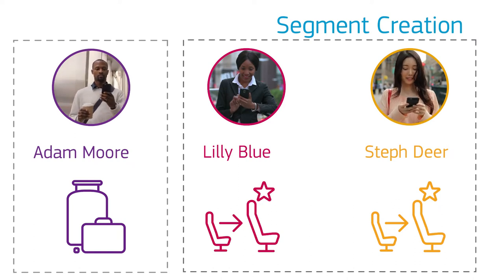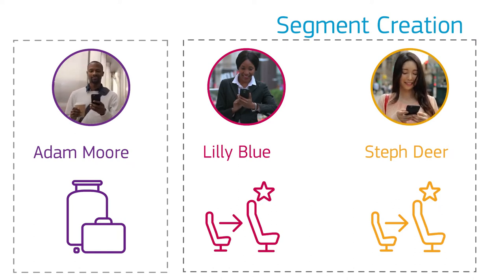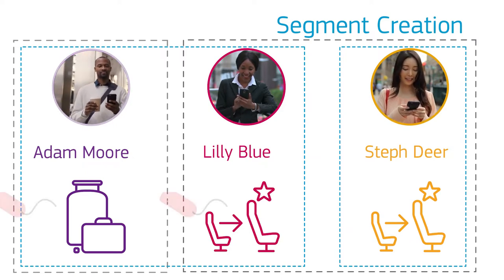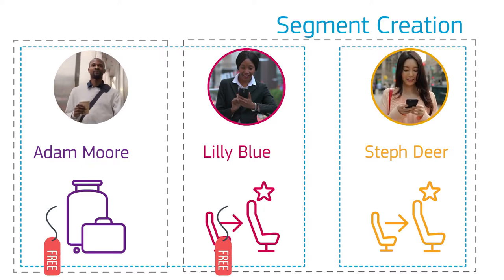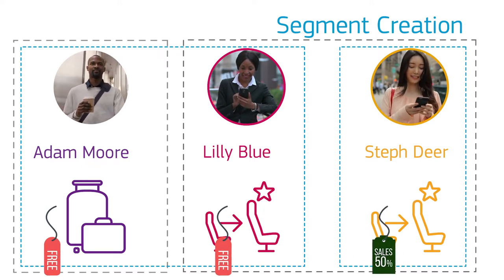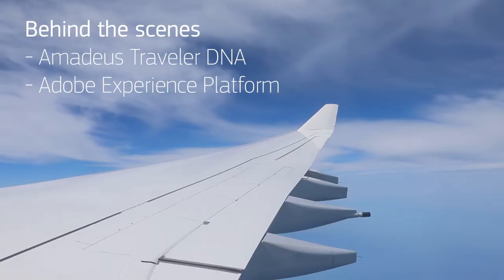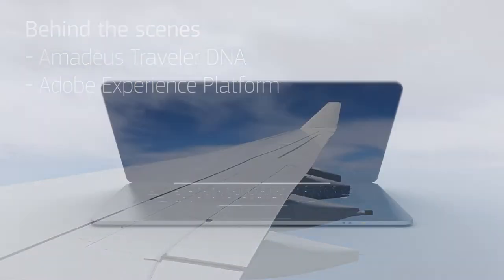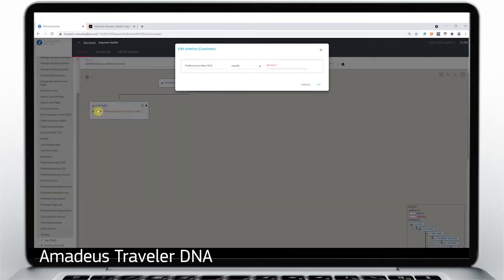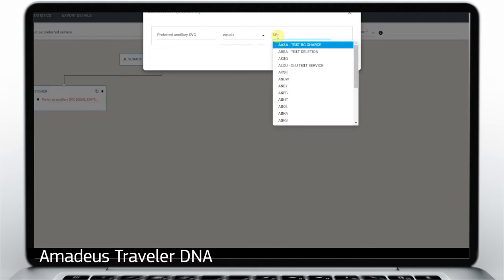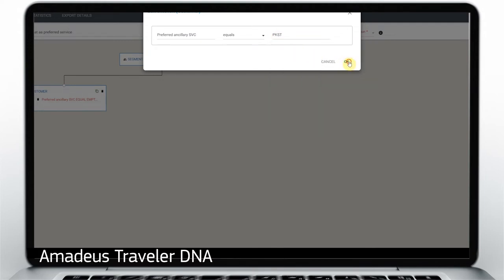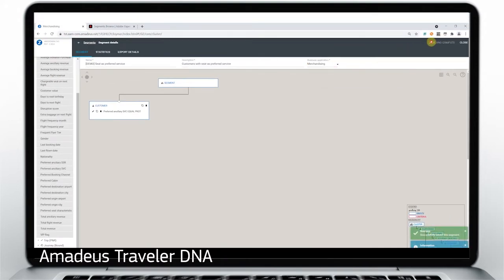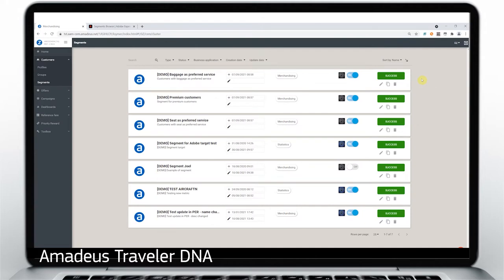Then we segment according to their frequent flyer status and customer lifetime value. Our intent is to convince the traveller to purchase a flight by offering a free ancillary for high-value customers and a promo code for other known customers. Horizon's marketing team can create segments in Amadeus Traveller DNA, using attributes such as preferred ancillary and additional data points to create custom, tailored retargeting segments that sync with Adobe Experience Platform's real-time profile.